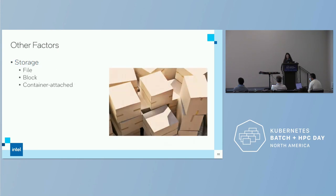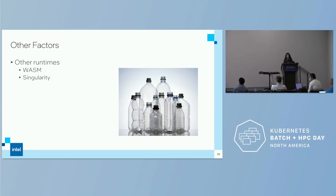There are other factors still to address. There's file, block, and container-attached storage. Some container-attached solutions require a core outside of Kubernetes just to run because they're running clients all the way through. We also need to be looking at other runtimes. Wasm is gaining popularity — we're going to have to deal with it. Singularity is an HPC-specific container that's neat as a project but not really mainstream, so anything during container-id isn't going to handle that.